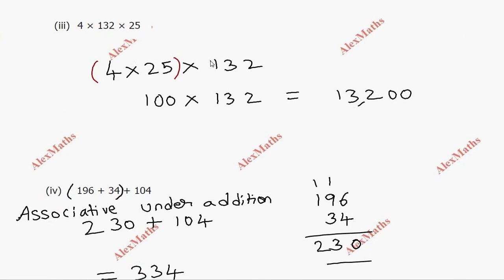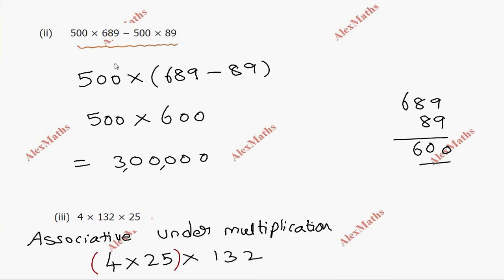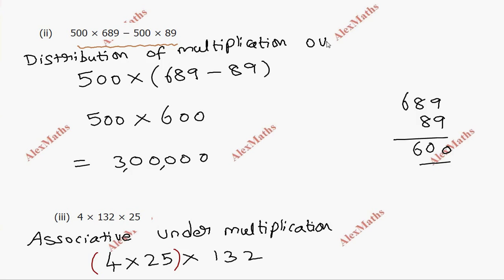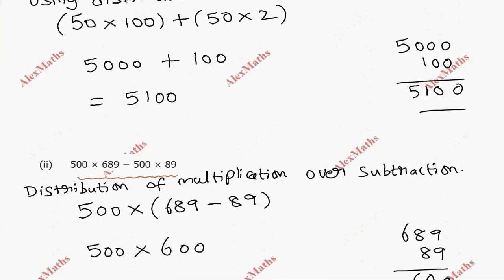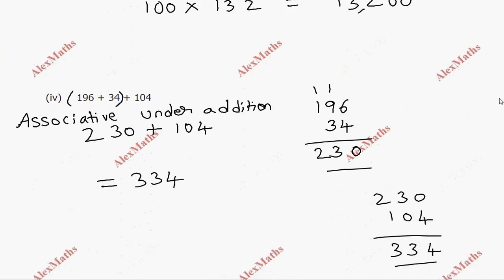For the multiplication sub-part, we use associative under multiplication — changing the grouping order, applying brackets differently. For the last part, we apply distribution of multiplication over subtraction in reverse to simplify. Using all these properties makes simplification easier.